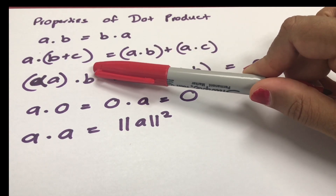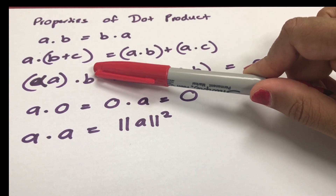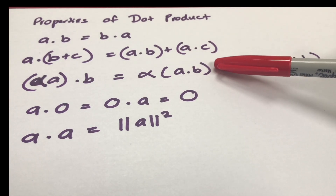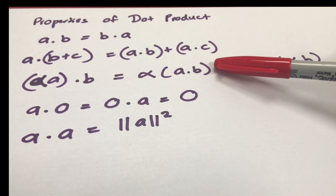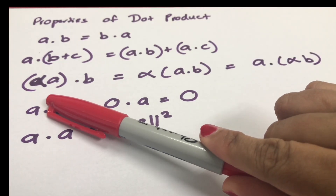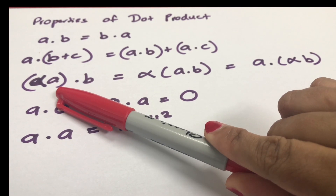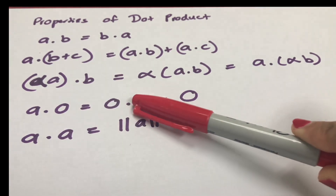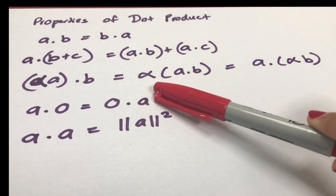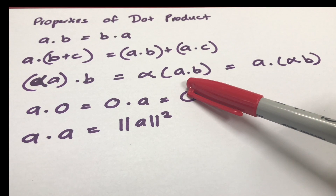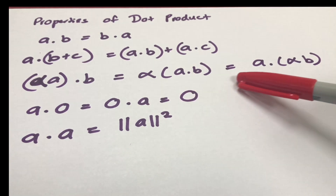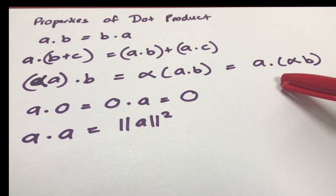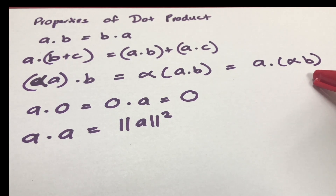The distributive property states that the dot product of vector a with vectors b plus c is equal to the dot product of vector a and b, plus the dot product of vector a and c. When we have a scalar multiplied by a vector dot another vector b, this could be written as the scalar multiplied by the dot product of vectors a and b, or a dot the scalar multiplied by vector b.